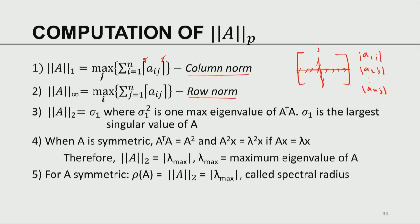The 2-norm of a matrix is simply sigma₁, the largest singular value, where sigma₁² is the maximum eigenvalue of AᵀA. When A is symmetric, Aᵀ equals A, so AᵀA equals A². Since A²x = A(Ax) = A(lambda x) = lambda(Ax) = lambda² x, if lambda is an eigenvalue of A then lambda² is an eigenvalue of A², and more generally lambda^k is the eigenvalue of A^k.